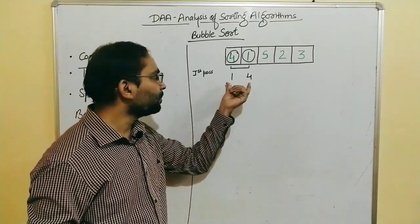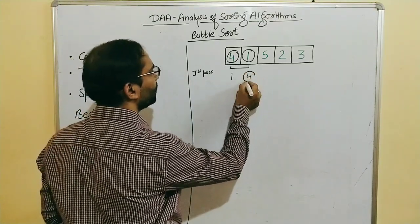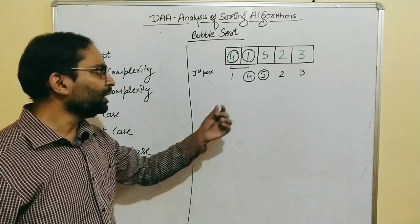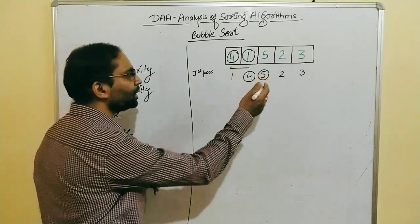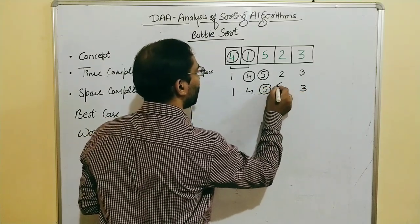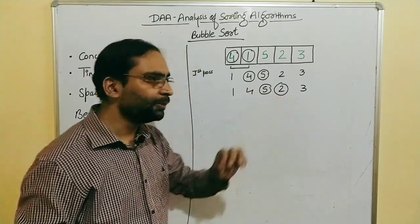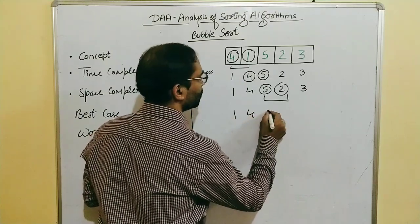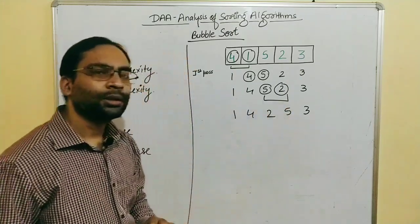That's the first step of the first pass. Next, we compare the next two elements — 4 and 5. Since 4 is less than 5, no swapping is needed. We move to the next comparison: 5 and 2. Since 5 is larger than 2, there will be a swap, giving us 2, 5, and 3 in those positions.